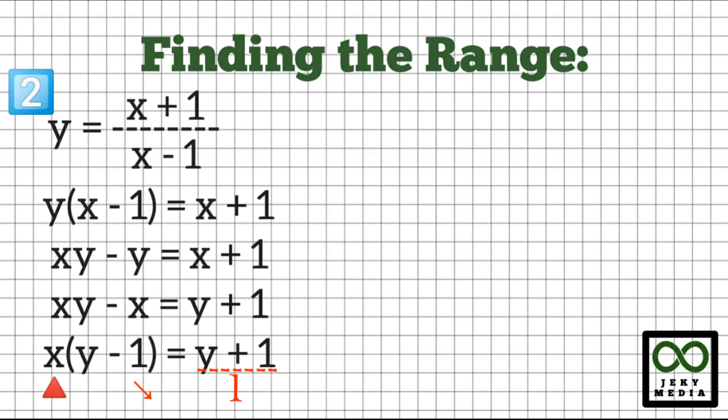Isolate x on the left by multiplying (y minus 1) to the denominator on the right. This will become x equals (y plus 1) over (y minus 1).